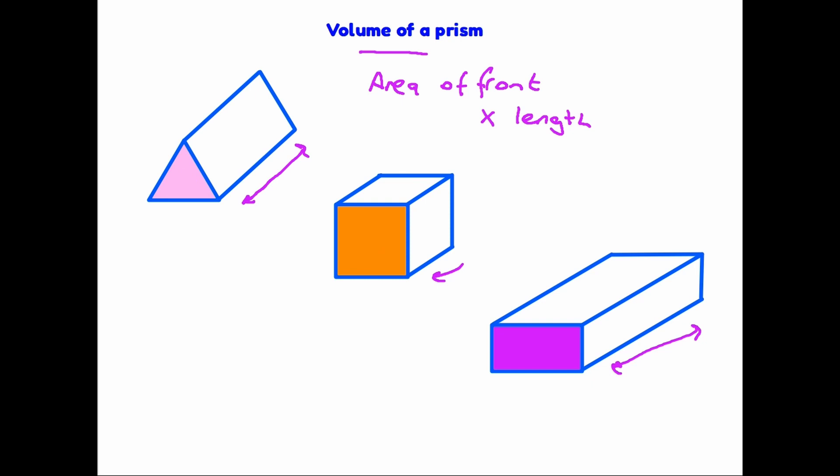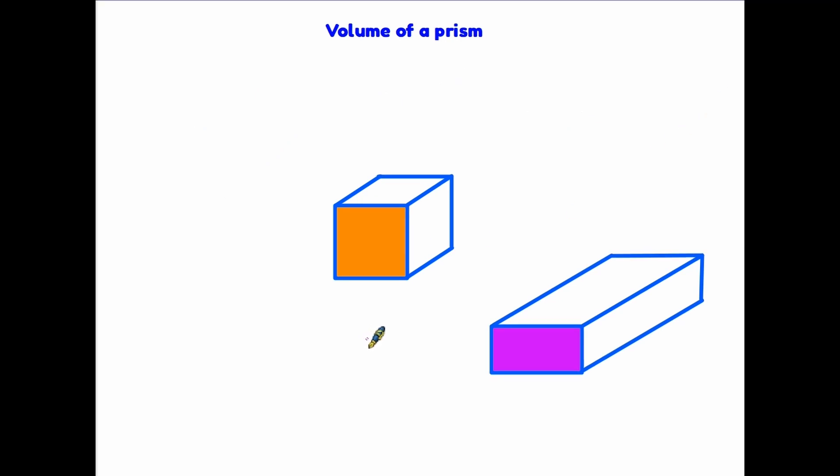So it is going to depend on the shape of the front face as to how you make the calculation. So let's have a look at a couple of examples. Let's start with the simpler ones - we have a cube and a cuboid. I'm using these two together because the process is exactly the same. Let's put some measurements on here. Let's say that the cube is 3 centimeters wide, and also therefore, because each side is a square, it's 3 centimeters high.